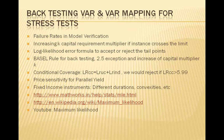The Basel Committee backtesting process attempts to strike a balance between probability of Type 1 and Type 2 error. The committee requires market VaR to be calculated at 99% confidence level and backtested over the past year. At 99% confidence we expect 2.5 exceptions — calculated as 255 times 1%. To compensate for inaccurate models, the committee established a scale of number of exceptions and a corresponding increase in the capital multiplier.